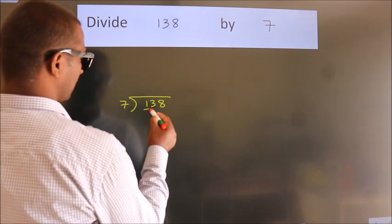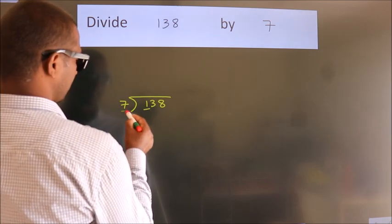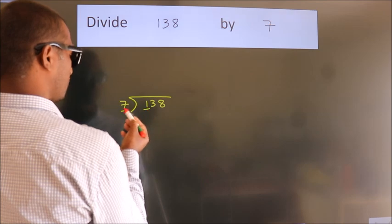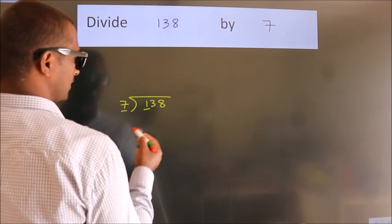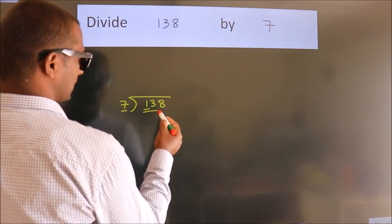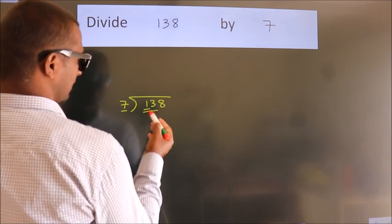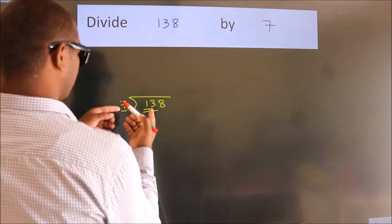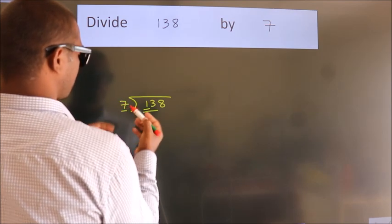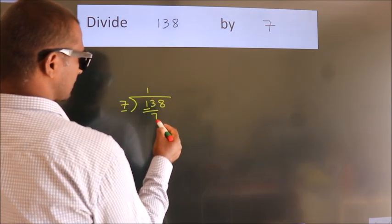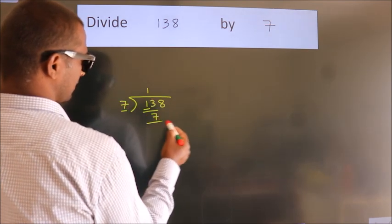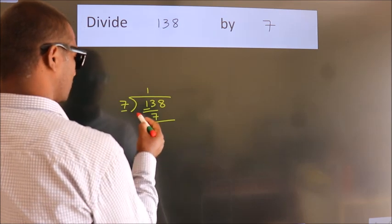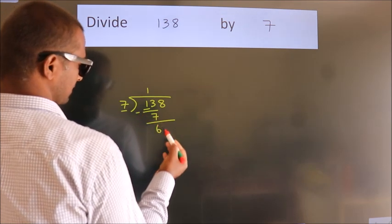Here we have 1, here 7. 1 is smaller than 7, so we should take two numbers — that's 13. A number close to 13 in the 7 times table is 7 ones, 7. Now we subtract and we get 6.